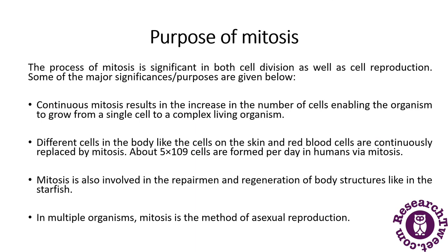Mitosis is significant both in cell division and cell reproduction, similar across plants and animals. Continuous mitosis enables an organism to grow from a single cell to a complex living organism. Different cells in the body, like skin cells and red blood cells, are continuously replaced via mitosis.